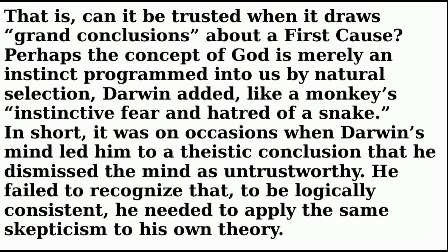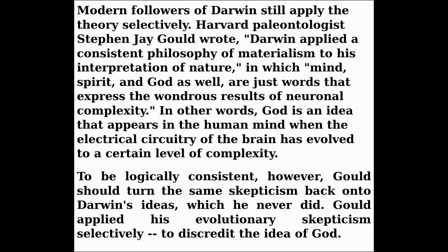Darwin's followers have done the same thing. Stephen Jay Gould said Darwin showed us that the idea of God is just the result of our neuronal complexity — that the idea of God appears in the human mind when the brain's electrical circuitry has evolved to a certain level of complexity. But to be consistent, he would have to apply that same skepticism to Darwin's ideas. The upshot is that many evolutionists use this skepticism against Christianity for ideas they don't like, but fail to see that once they adopt that form of skepticism, they have to apply it to their own theory as well. Only the person who affirms a rational creator of the universe has a basis for trusting human rationality.